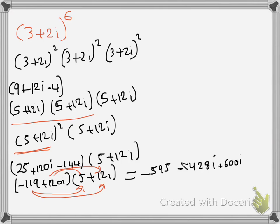Now I will simplify this one here. So I will have negative 1440 minus 595, that gives me negative 2035 for the real part.